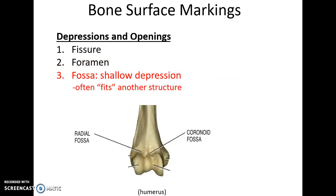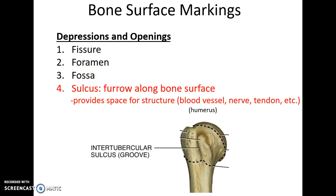Fossae are shallow, bowl-like depressions found in bones. A sulcus is a long furrow running into the bone structure; furrows allow space for blood vessels, nerves, tendons, and so forth that run along the surface of the bone.